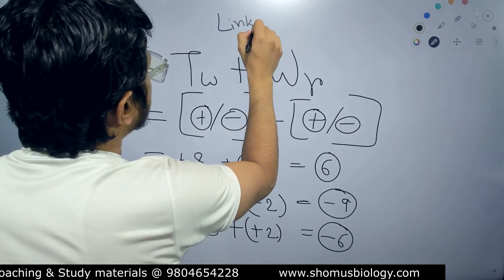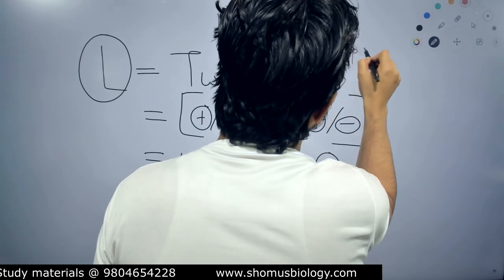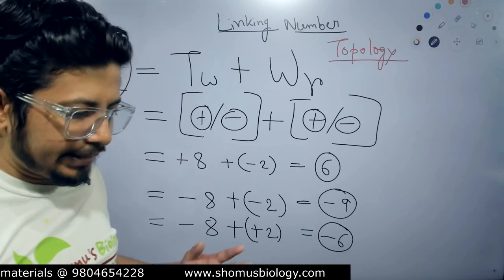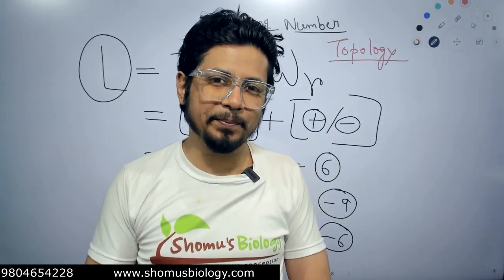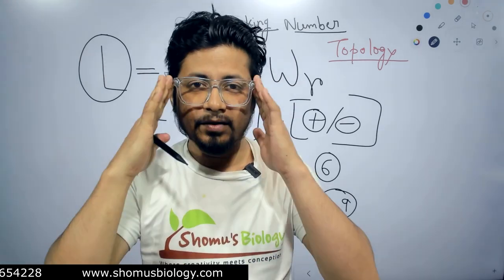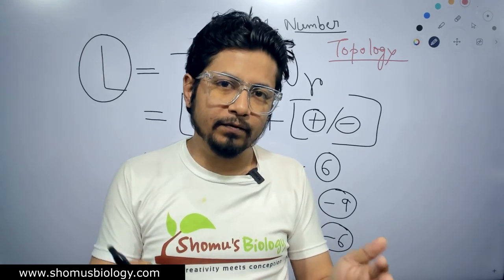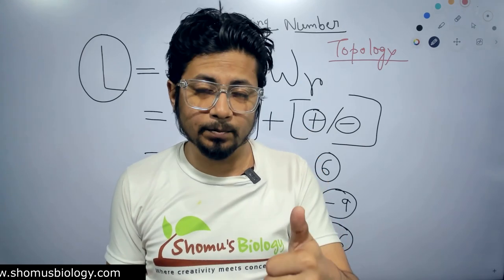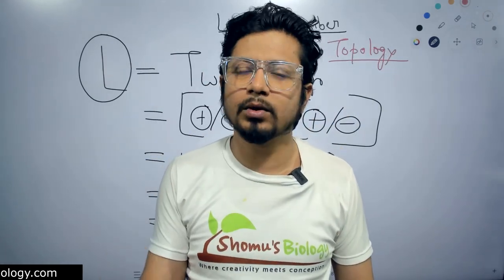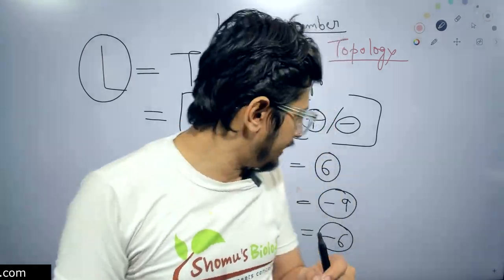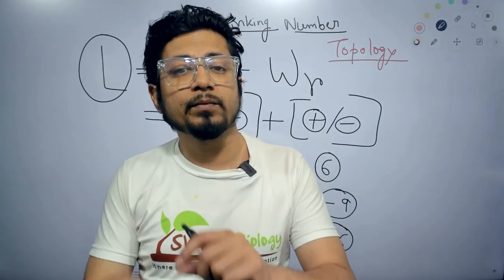So this is what linking number is all about, and this is what DNA topology is all about. The DNA is normally present in the relaxed state. The moment you change the twist, it becomes stressful for the DNA. That's why it creates writhe in order to relax itself and free itself from the stress applied due to the change in twist number. Writhe comes as a product of the twist change from the relaxed state — either overwound (positive supercoiling) or underwound (negative supercoiling). Once you understand this, the concepts of twist, writhe, linking number, and positive/negative supercoiling will be super clear.